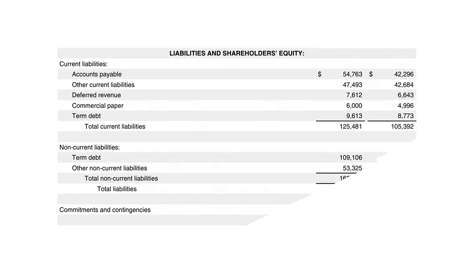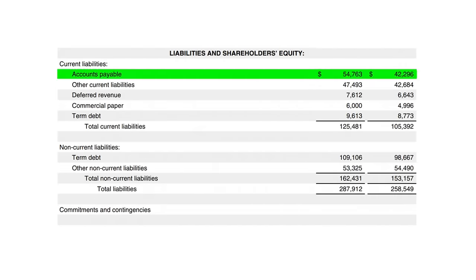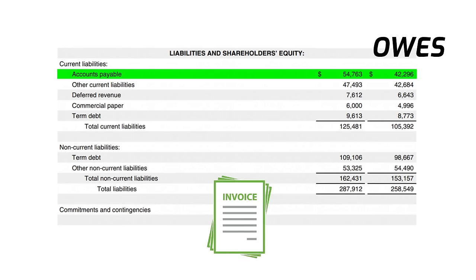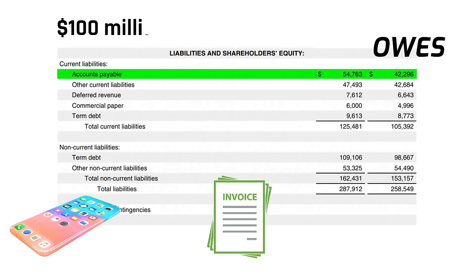Now I want to jump to the liability section of the balance sheet. The first line is accounts payable — the opposite of accounts receivable. This is money that Apple owes to its suppliers for products and services received but not yet paid for. For example, if the company that makes the glass for the iPhone sent Apple $100 million of glass during the month, until Apple pays its supplier, that $100 million shows up in accounts payable.